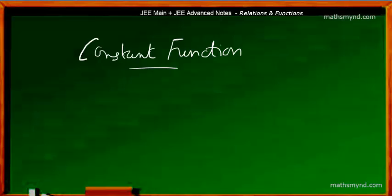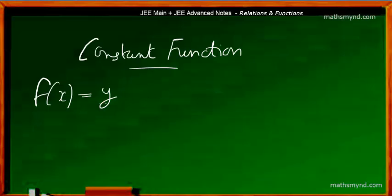Welcome to constant function. Now we know that when we represent a function as f of x is equal to y, the function is defined or named based on what kind of process is undergone by the input element x to get the output element y. So it simply means that a constant function infers that we are dealing with a constant output. The key point is that the output is constant.